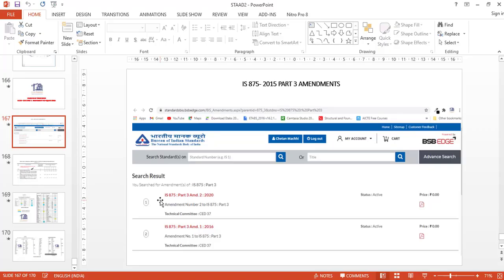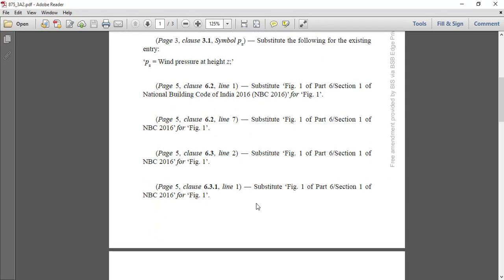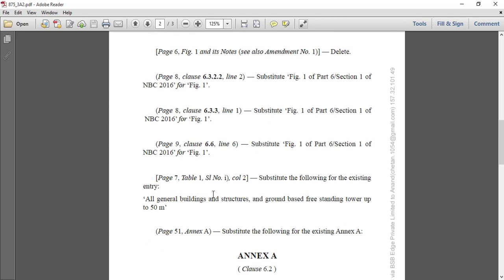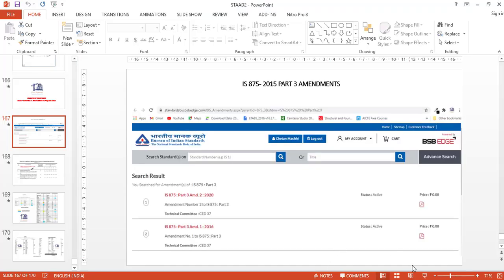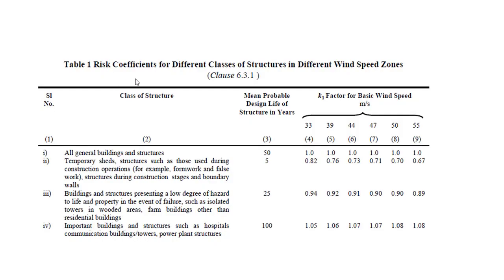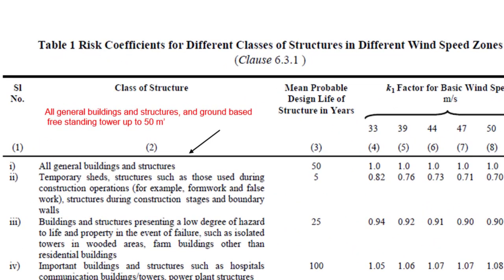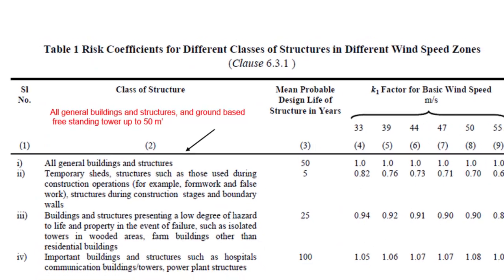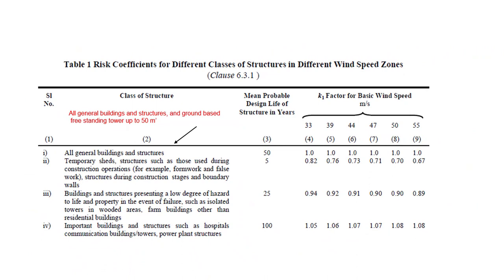Now let's switch to the changes. For your understanding I am taking one example. On page seven, table one is given with a change that all general buildings and structures, and ground based freestanding towers up to 50 meters — this category is updated. So here in table number one, that is for your risk coefficient K1, the first category class of structure is updated. Previously it was all general buildings and structures. Now the updated class of structure will be all general buildings and structures and ground based freestanding towers up to 50 meters. So the ground based freestanding tower category is added here.